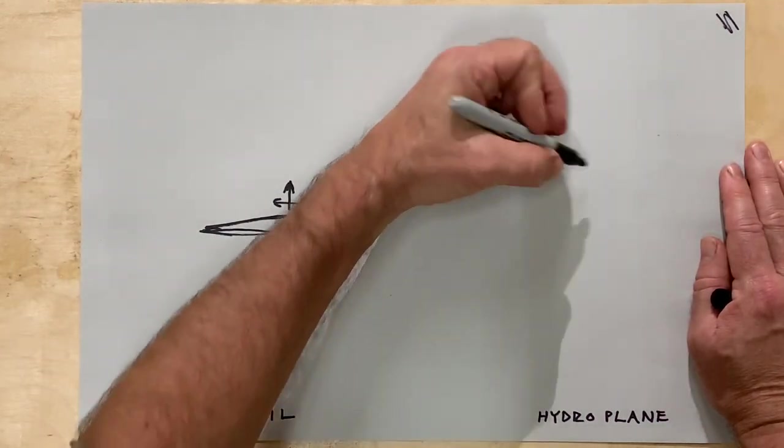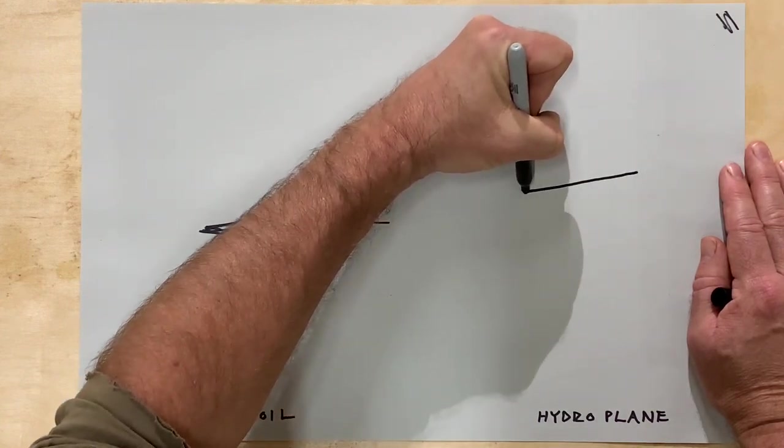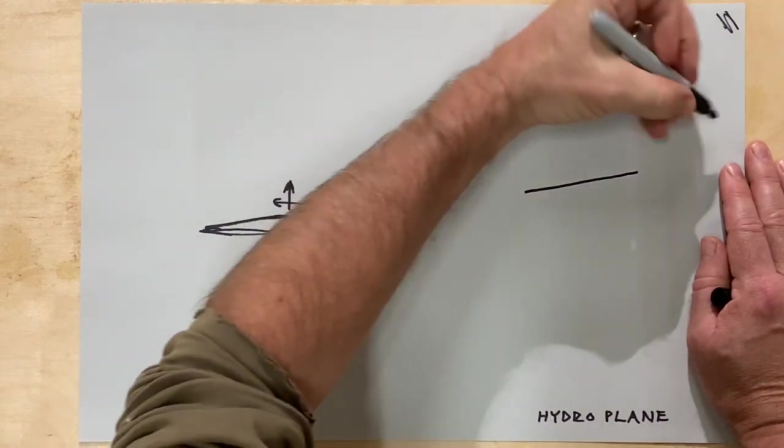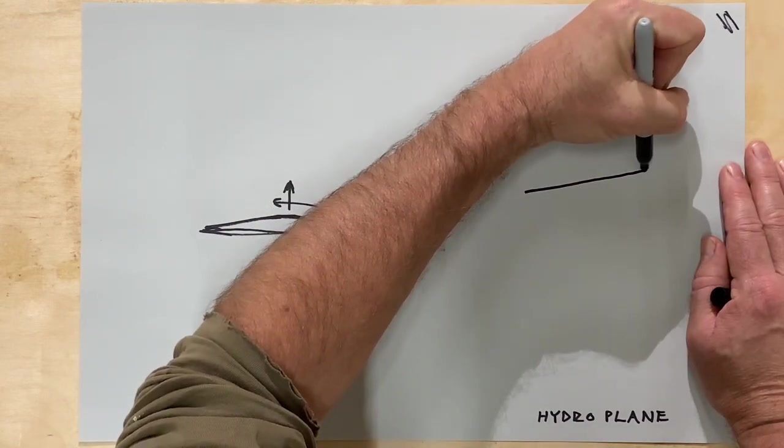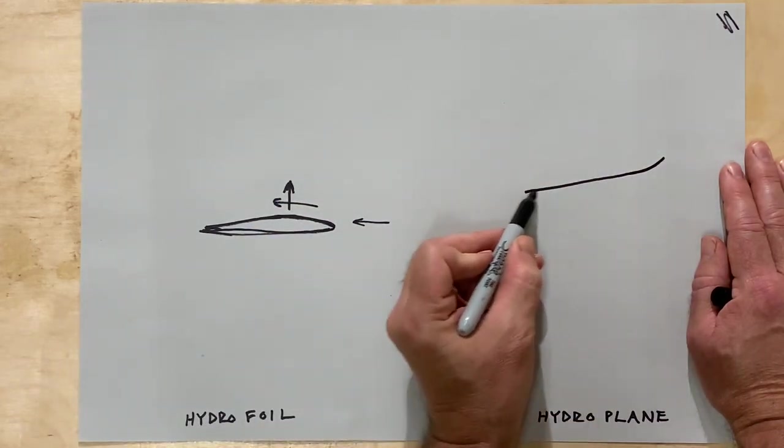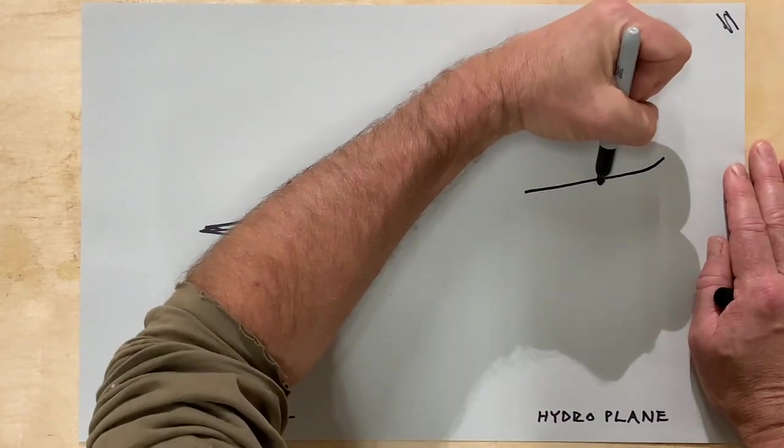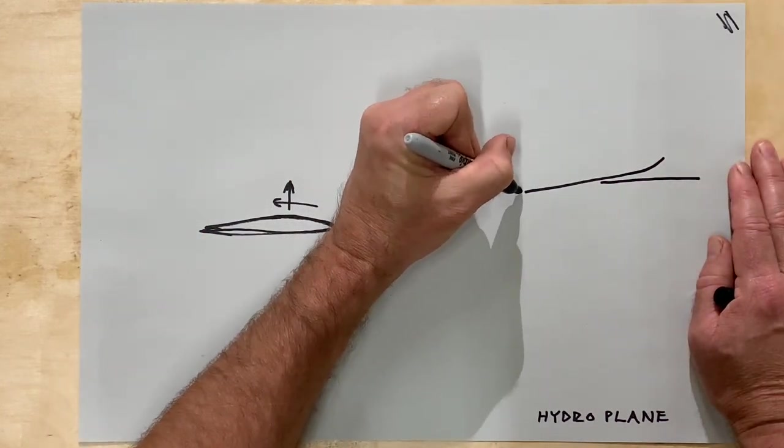So now let's look at an inclined plane. Water ski and surfboard, windsurfing boards, they have a little bit of curvature in the front and then they have basically a flat section and they sit in the water like this.